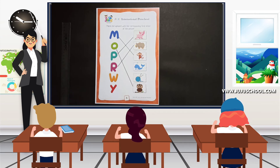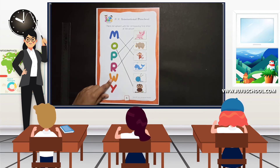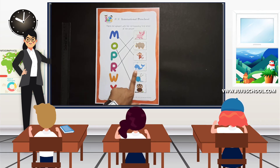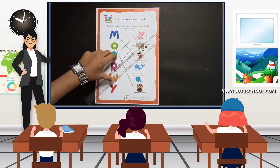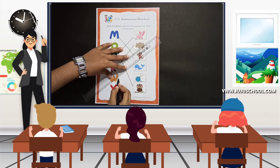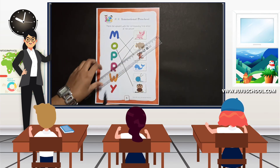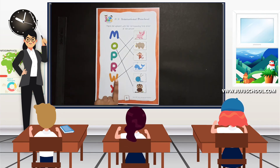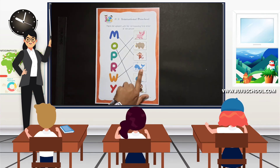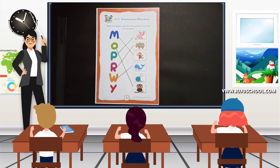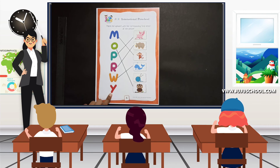Next we move on to the alphabet W. W for — yes, it's whale! Wow, we are doing great. Take your pencil and your scale, draw a line from W to whale. W for whale — whale starts from the letter W.